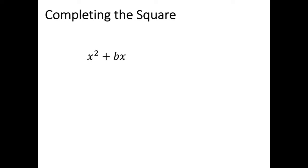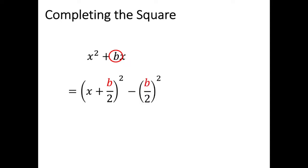When we refer to completing the square, we'll normally have an expression that contains x squared plus bx — so it might be x squared plus 3x, x squared plus 9x, or x squared plus 5x. We complete the square by identifying our b value. We take that b value, divide it by 2, and write our expression as x plus b divided by 2, in brackets, squared. Then we subtract that b divided by 2 value squared.